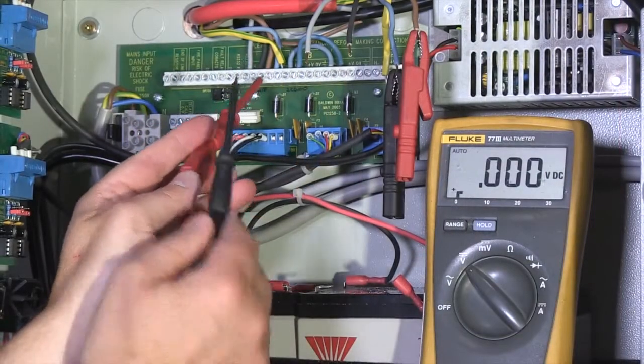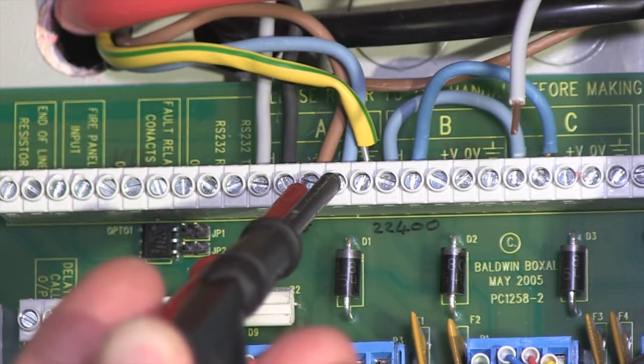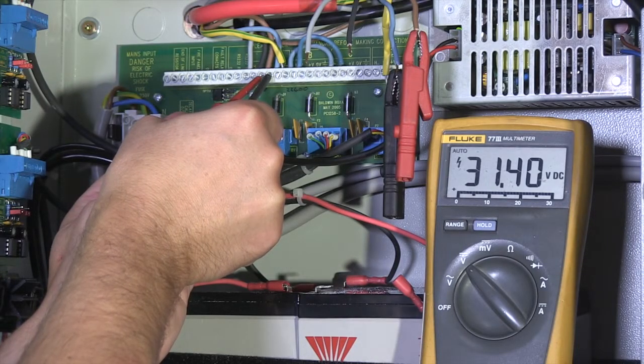The voltage between the 0 volts and plus volts at the A circuit terminals should be between 29 volts and 35 volts DC.